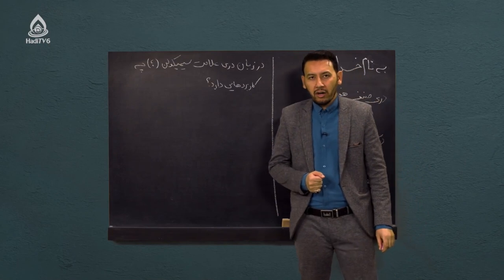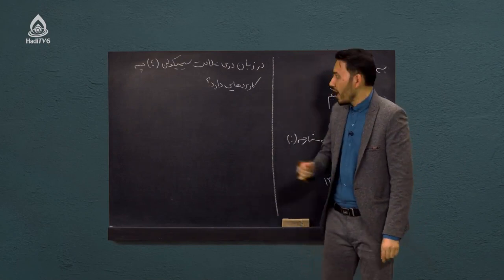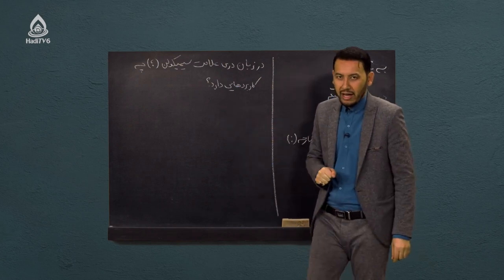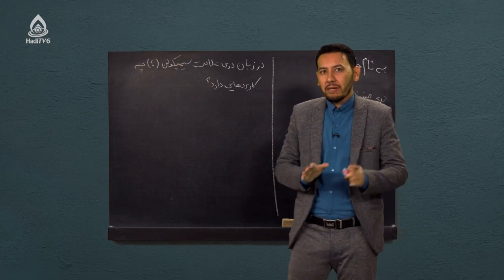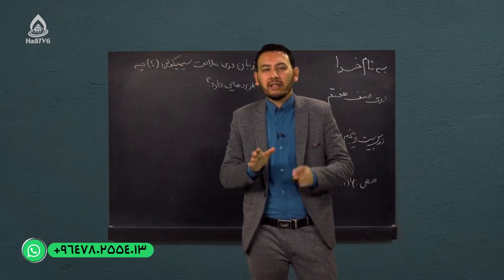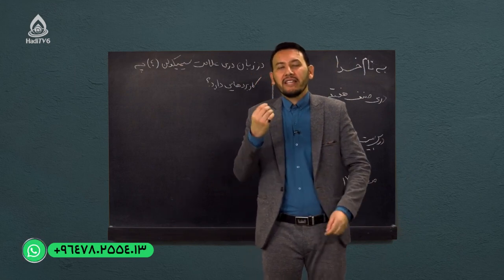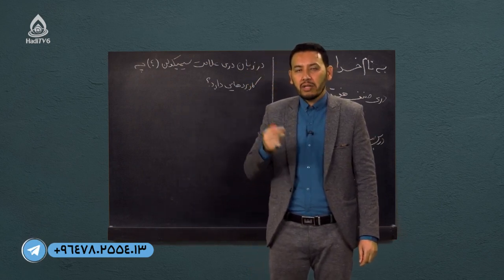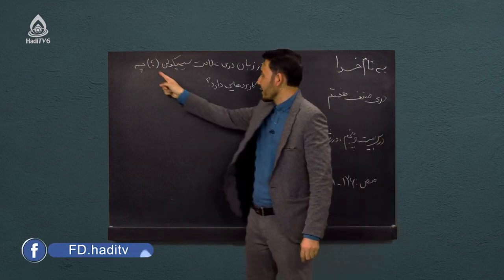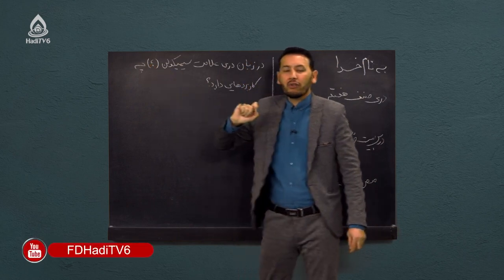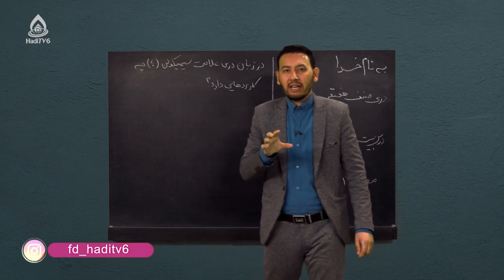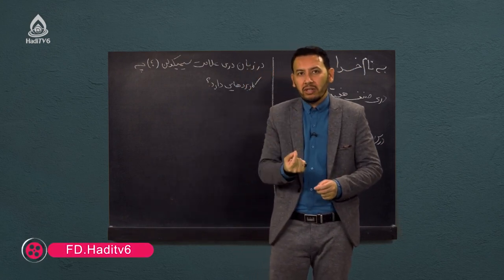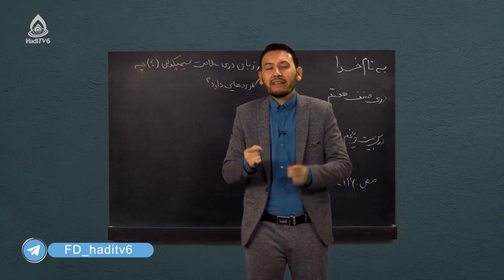خب شاگردهای عزیز، کار خانگی جلسه قبل: سوالش این بود که در زبان دری علامت سیمی کلن چه کاربردهایی دارد؟ گفتیم که سیمی کلن یکی از علامت هایی است که در حوزه نگارش و جمله بندی یک نوشته کمک بسیار زیادی می کند. علامت سیمی کلن اگر دقت کنید از دو علامت تشکیل شده: یک نقطه دارد و بالای این نقطه یک علامت کامه یا ویرگول قرار دارد.